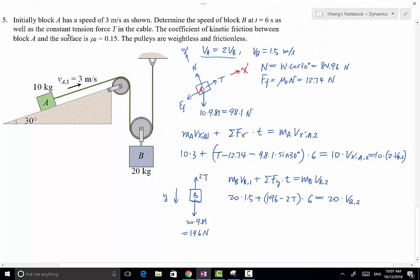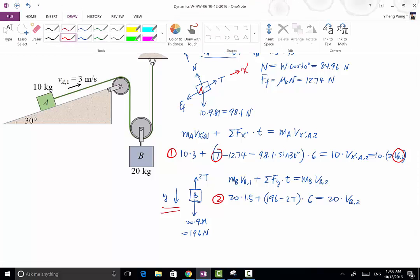So now I have written one equation of linear impulse, principle of linear impulse and momentum for block A along the X' direction, and then I just wrote a second equation for block B, and that is along the Y direction, which is vertical down for B. So I have two equations, and I only have two unknowns, T and VB2. So by coupling these two equations, I can solve for both of my unknowns.